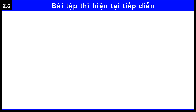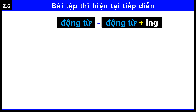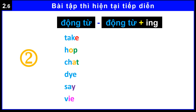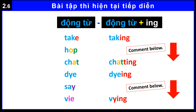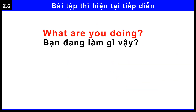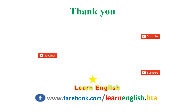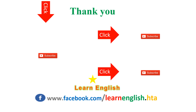Present continuous tense exercise. Change verb to verb plus -ing form. What are you doing? Thank you for watching and listening. Click on the subscribe button and click on the bell icon for more videos. Don't forget to like and share.